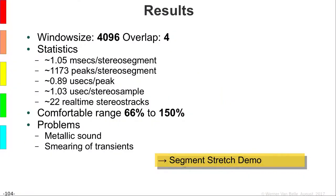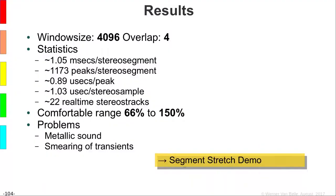Results: the time-stretcher uses a window size of 4096 with an overlap of four. Most tracks have around 1,100 peaks. On my computer, 22 tracks can be processed in real time — it's not slow. The comfortable range is between 66 and 150 percent. Beyond that, you start to hear a metallic sound because noise in the signal is not correlated — when you time-stretch it you make it correlated, producing a reverb-like hall sound.